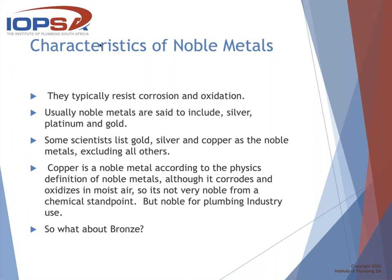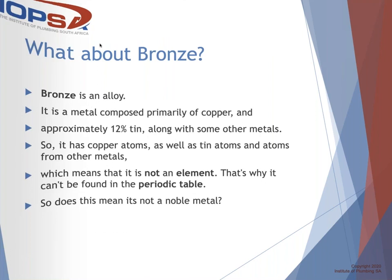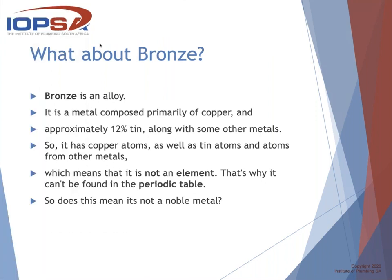Once again comes the question: what about bronze? Bronze is an alloy — a metal composed primarily of copper and approximately 12% tin, along with some other metals. It has copper atoms, tin atoms, and atoms of other metals, which means it's not a pure element. That's why you won't find it on the periodic table. But does this mean it's not a noble metal?